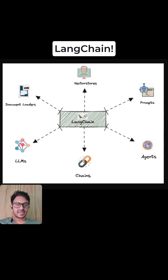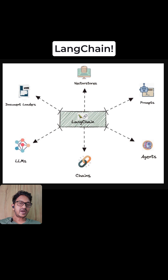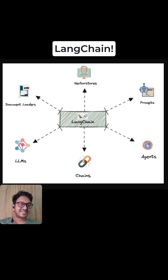So what exactly is LangChain? LangChain is a framework founded by Harrison Chase. It is used for building applications with large language models. It provides a standardized way to chain together different components in a sequential linear manner to create LLM-powered applications.